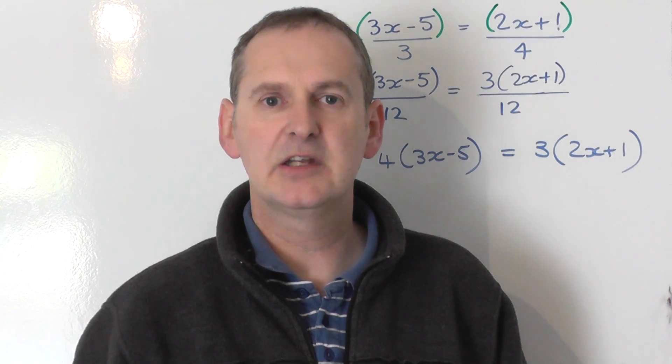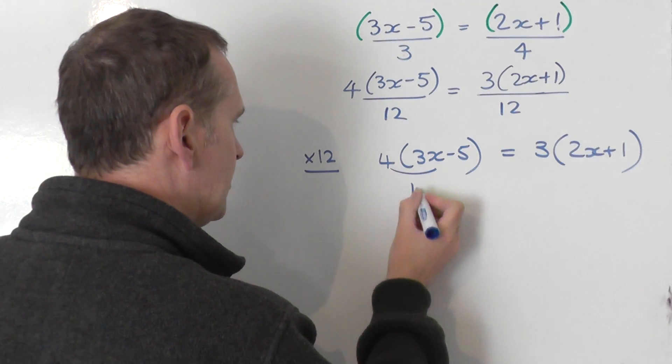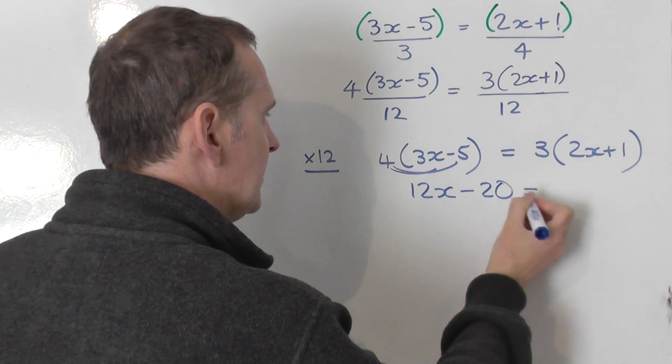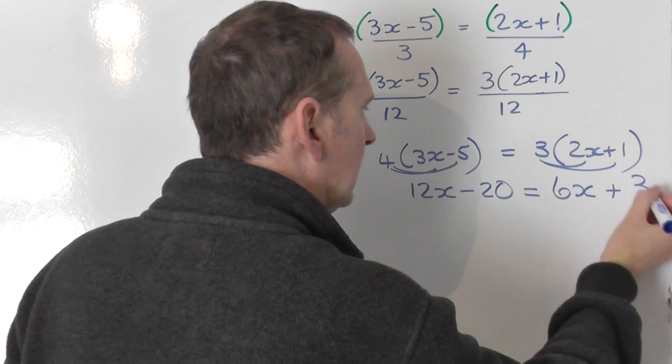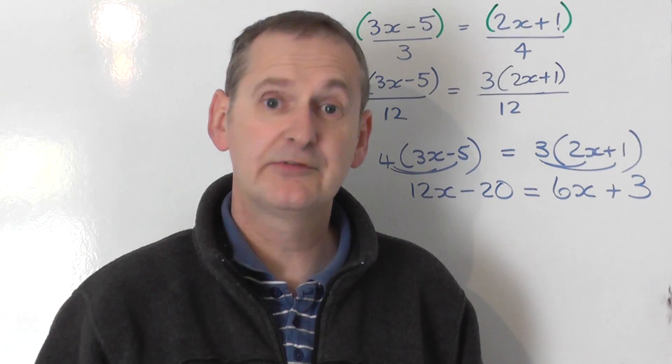I now get rid of the brackets by expanding out. So 4 times 3x is 12x. 4 times minus 5 is negative 20. 3 times 2x is 6x. 3 times plus 1 is plus 3. So I end up now with an equation with no brackets or fractions.